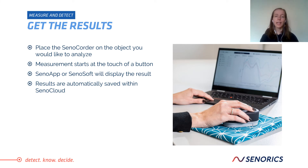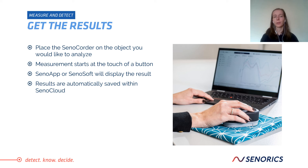Once you have selected your application, you can place the ZenoCoder on your object and start the measurement within seconds. After that, you will have the results displayed either in ZenoSoft or in the ZenoApp. For example, the program might tell you that your object, or your sample, is made from silk. All results are also automatically saved within the Zeno cloud, which means you can access them at any time using ZenoSoft or ZenoApp.